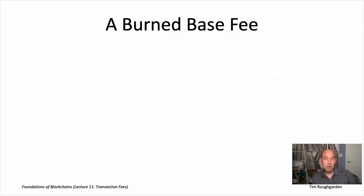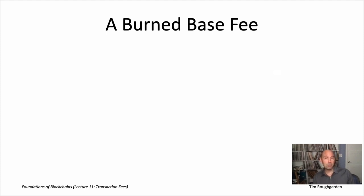First-price auctions are a totally reasonable way to have user-specified transaction fees in a blockchain protocol. That's how transaction fees have always been set for Bitcoin, and it's how they were assigned in Ethereum until very recently. But first-price auctions have a key drawback: it's pretty hard to figure out how to bid intelligently. Doing so requires reasoning about the bids of your competition — you might overbid and overpay, or underbid and miss out on inclusion.